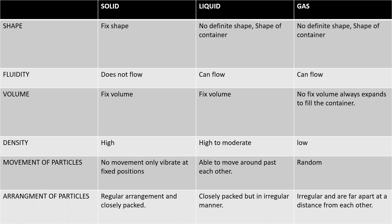Gases have no definite shape; the container is the shape. For example, juice has no shape of its own — it takes the shape of the glass it is poured into. Similarly, if you have an oxygen cylinder, the gas takes the shape of that cylinder. This property is called fluidity. Solids cannot be poured, so we say their fluidity is zero. Liquids and gases can flow.